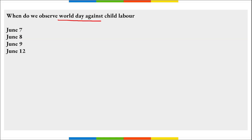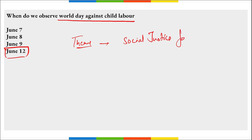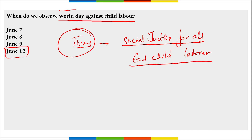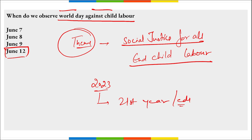When do we observe World Day Against Child Labor? It is observed on 12th of June to create awareness about child labor and the need to eliminate it. Children should be encouraged to study rather than work. The theme is 'Social Justice for All and Child Labor.' In 2023, it marked the 21st edition of the World Day Against Child Labor.